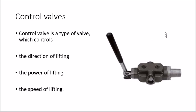Control valves have three basic functions. First, they control the direction of lifting — upward or downward. Second, they control the power of lifting — the amount of fluid or pressure required. Third, they control the speed of lifting — how fast or slow you want to raise or lower the load. These are the three basic functions of a control valve.